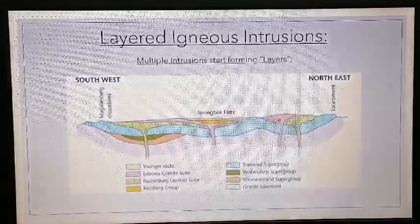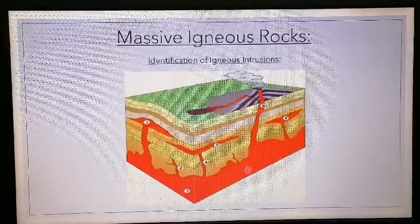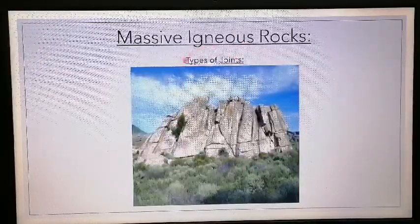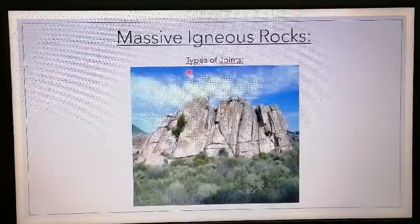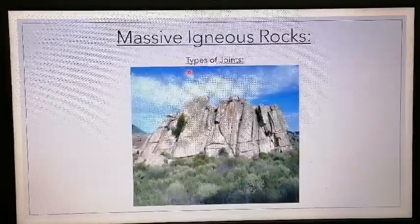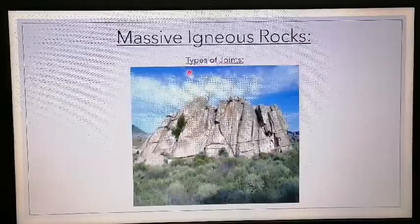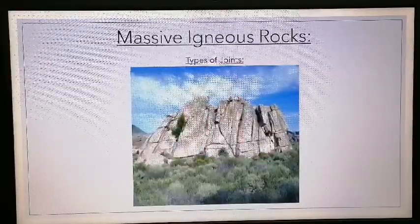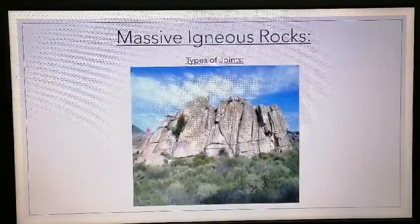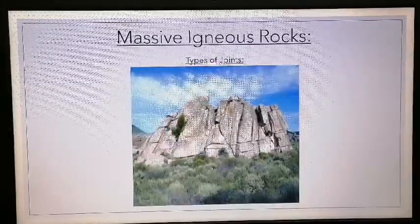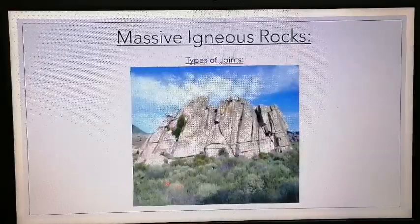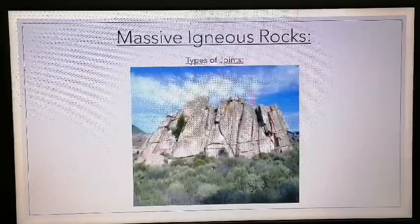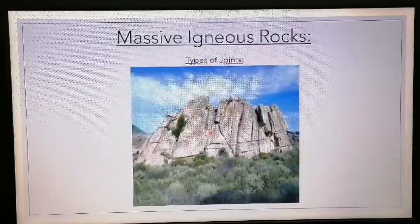Let's return to our igneous body. We said they're massive — they don't form bedding planes. Because they're massive, when they cool down they form different types of joints. The first is a cooling joint, or more correctly a contractual joint. Contractual joints form when these massive igneous bodies start cooling, and they run vertically downwards. Here we've got a granitic dome probably formed from a batholith — it could also have been a laccolith. All these vertical joints you see were cooling or contractual joints: as the magma cooled, it cracked and broke apart to form these joints.